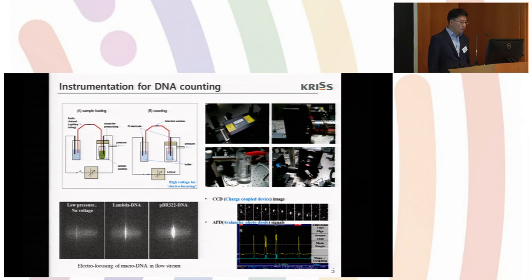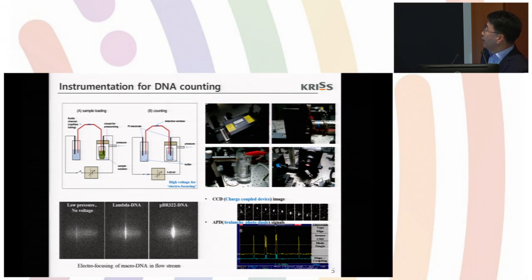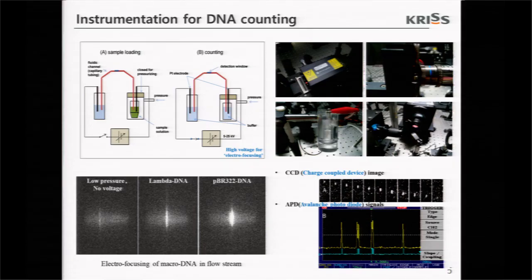Now let's focus on DNA counting. The conceptual figure of counting instrument is like this. It's very simple. Inlet here and capillary channel and outlet here and detection window here. The measurement principle is also very simple. First, make the DNA fluorescently activated. Second, make the DNA flow in the channel. Third, detect the fluorescently activated individual DNAs flow detection window. It's very simple.